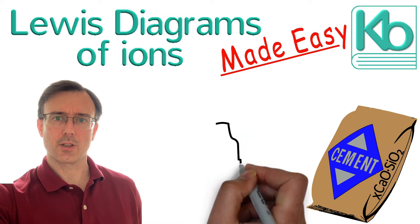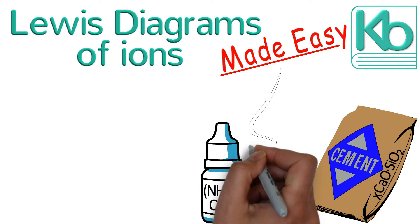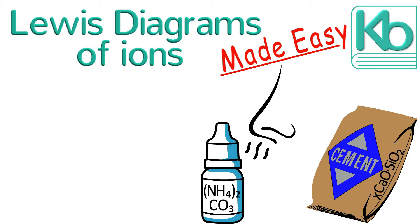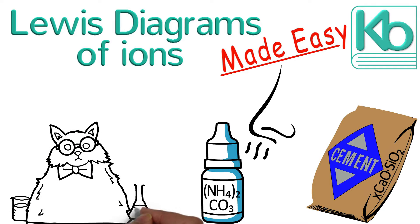We'll go through examples such as quicklime and smelling salts. If you already know how to draw a Lewis structure of a molecule, drawing a Lewis diagram of a polyatomic ion is fairly straightforward. However, if you need a refresher of simple Lewis diagrams, you might want to watch this other video of mine first.